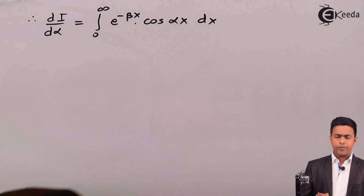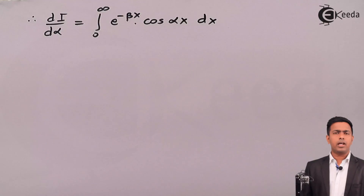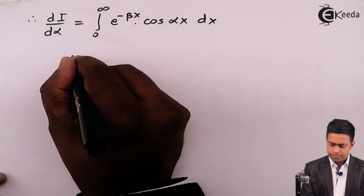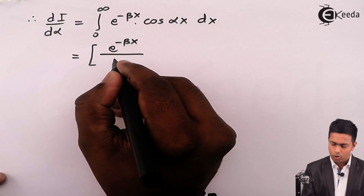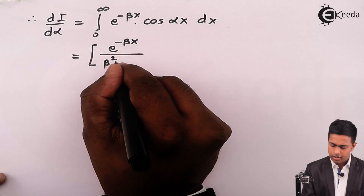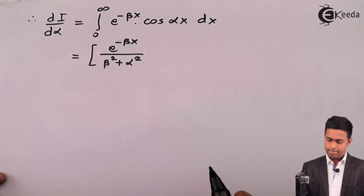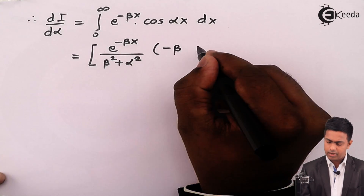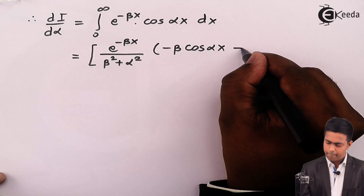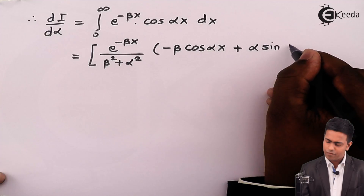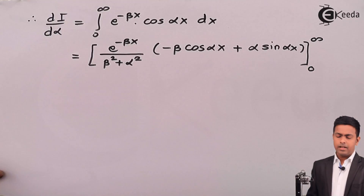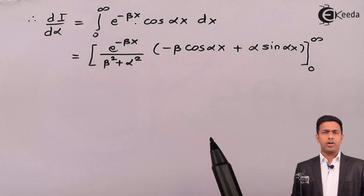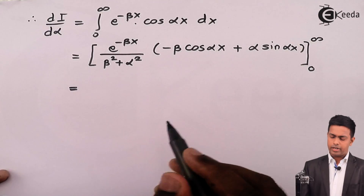Now if you see this function, we can directly apply the standard property of integration which you studied in 12th standard. By applying that property we get: e raised to minus beta x upon (beta squared plus alpha squared), in bracket, multiplied by minus beta cos(alpha x) plus alpha sin(alpha x). This is the standard property. Now let's apply the upper and lower limits.